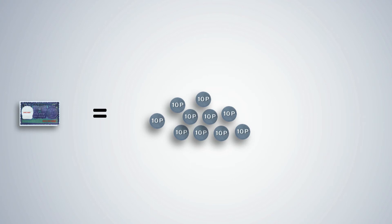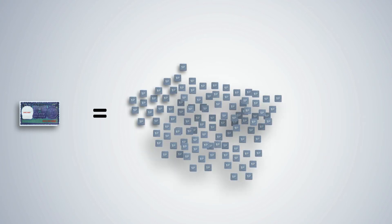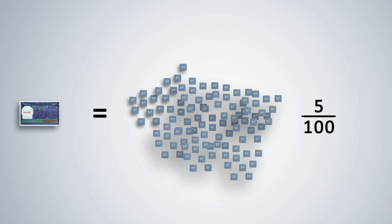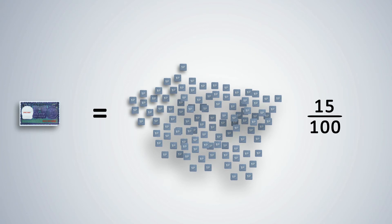1 rupee can also be exchanged for 100 paise. 5 one-paise coins are represented as 5 upon 100, or 5 hundredths of a rupee. And 15 paise is written as 15 upon 100, or called 15 hundredths.